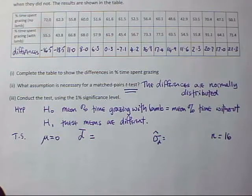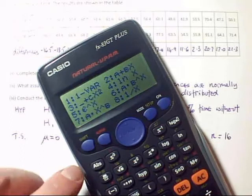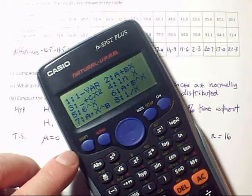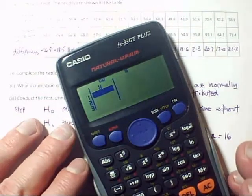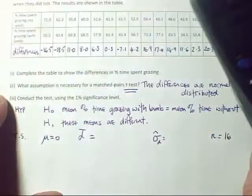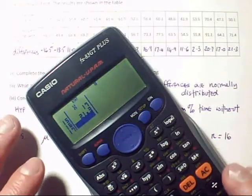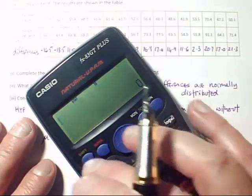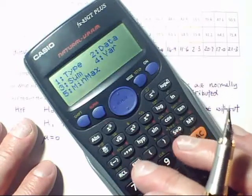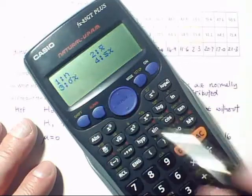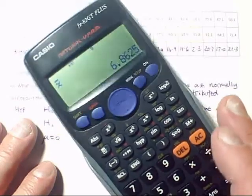I'll go into statistics mode on the calculator — that's mode 2, one-variable data. I enter all the differences starting with minus 16.5, through to 21.3. After entering the data and pressing AC, I go into stats mode (shift then 1) and select option 4 for means and variances. N is 16 as expected. X-bar, which is my D-bar, gives a mean of 6.8625.